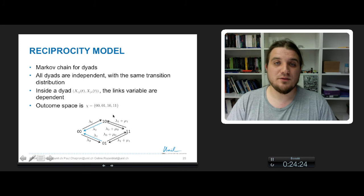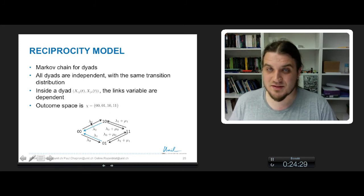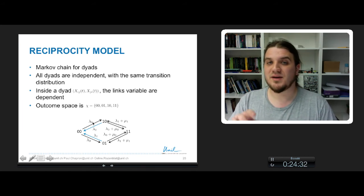In fact, when we are looking for network evolution model, we are looking for these kind of values, these values that are inside the transition rate matrix.